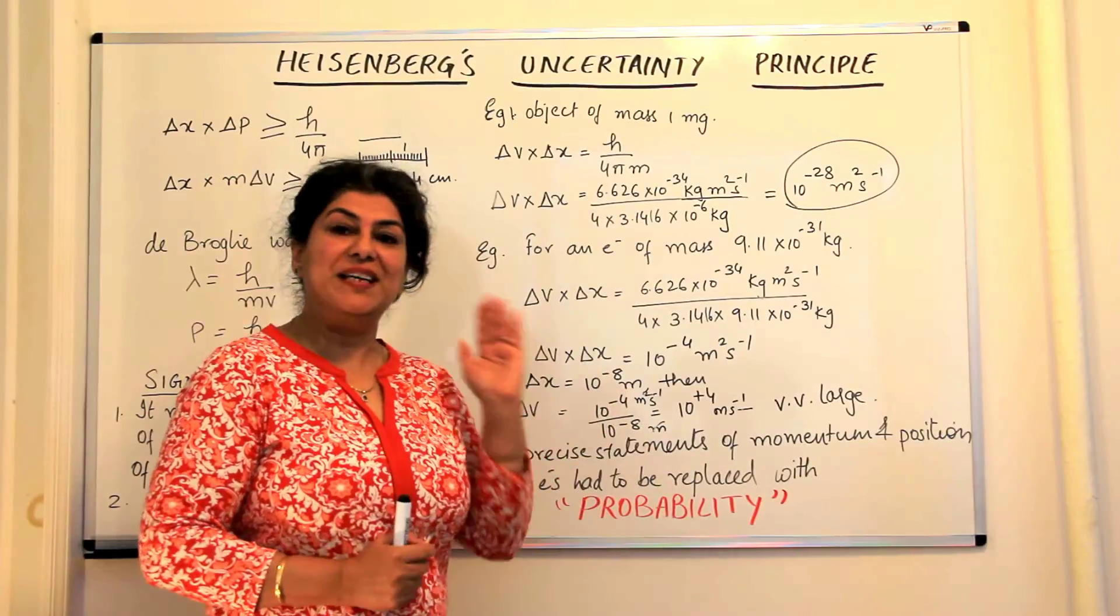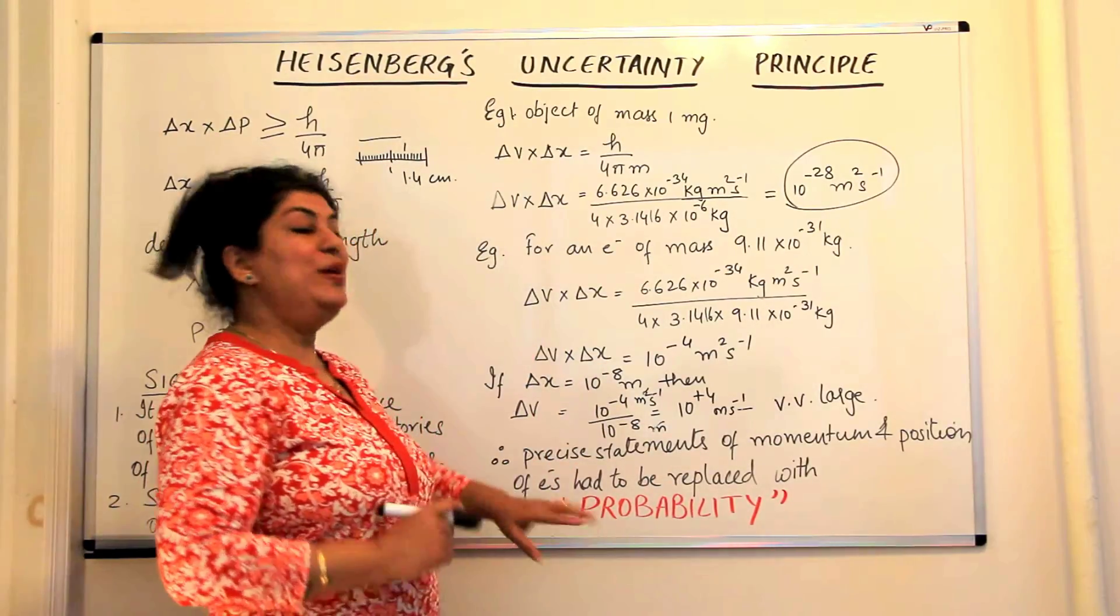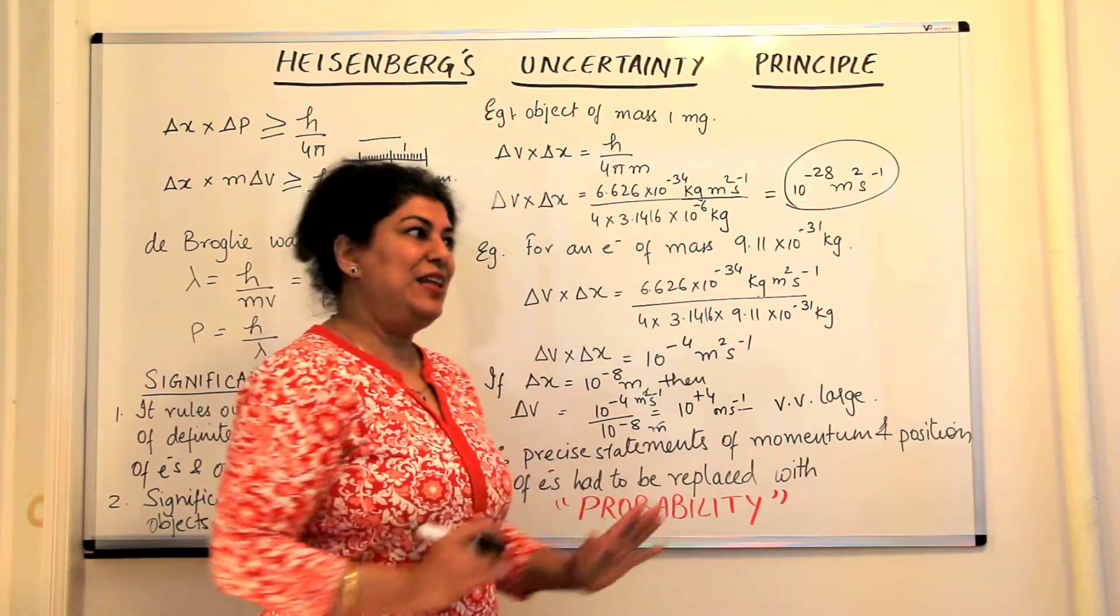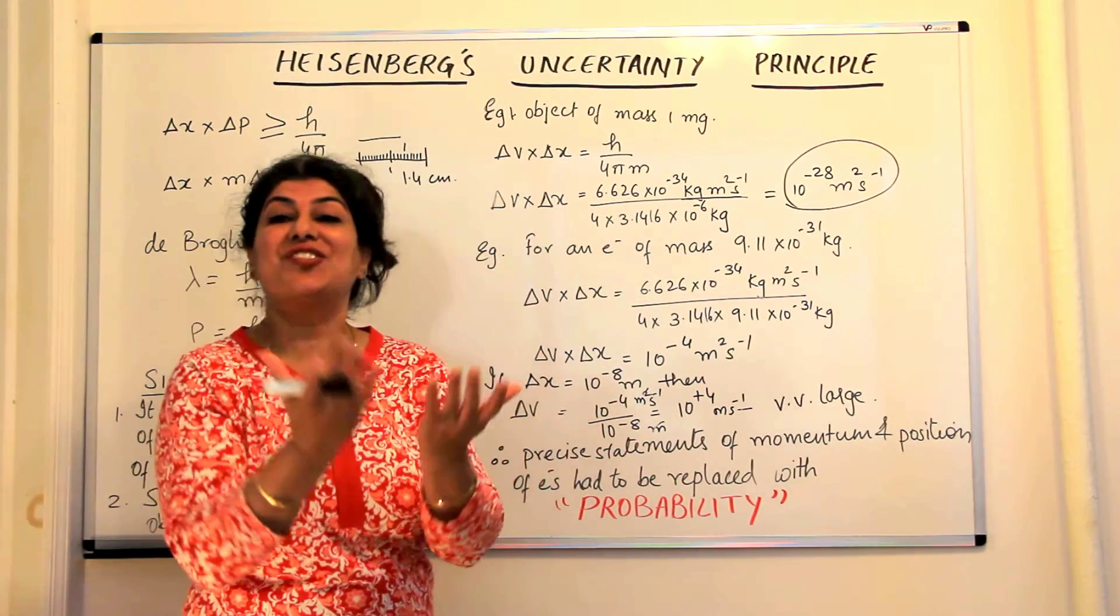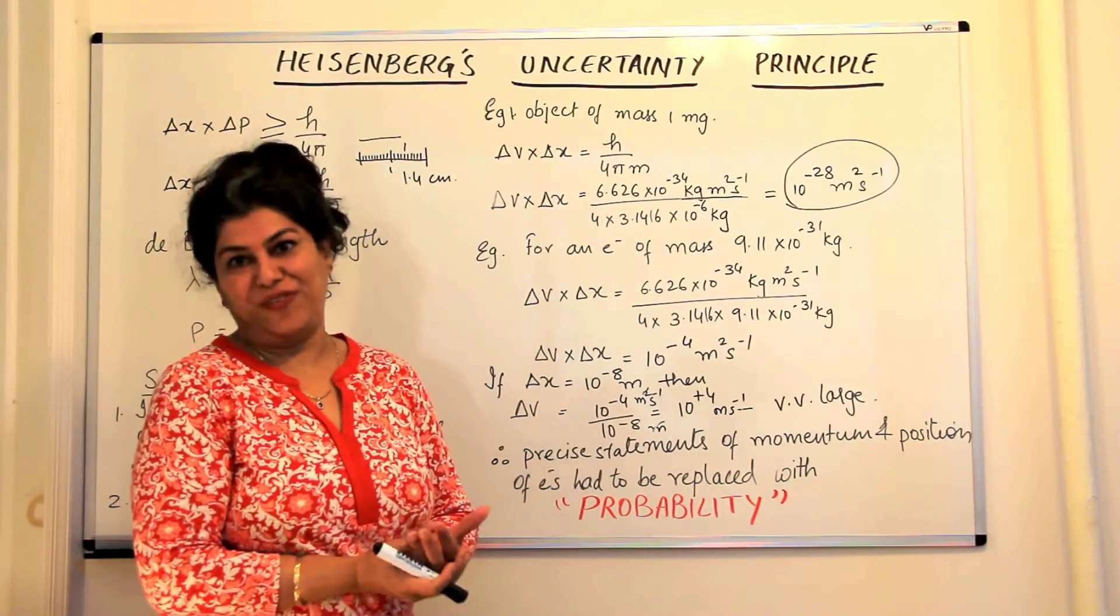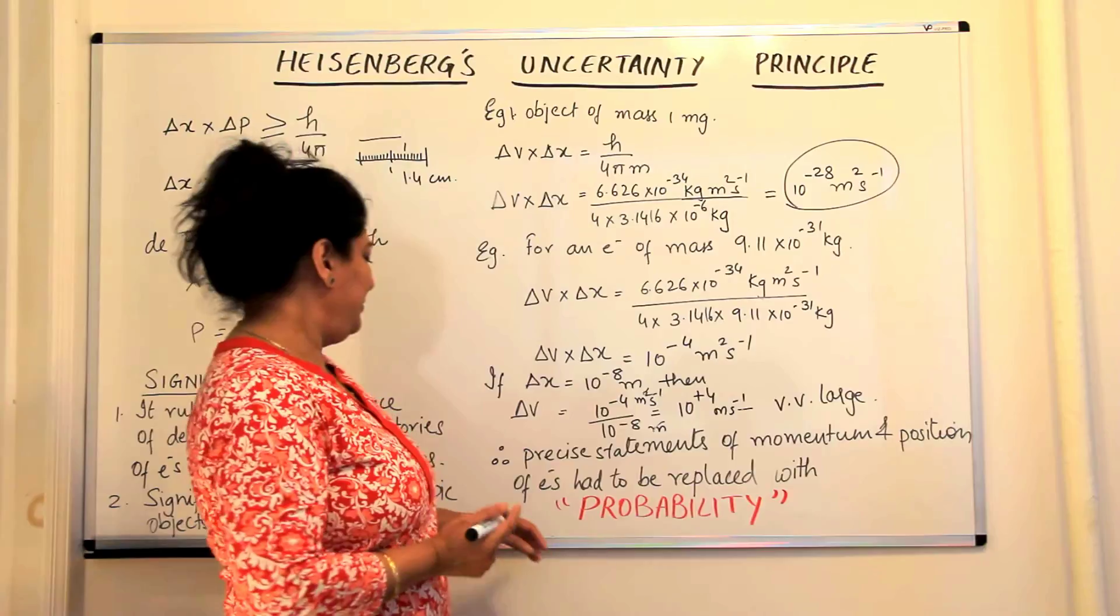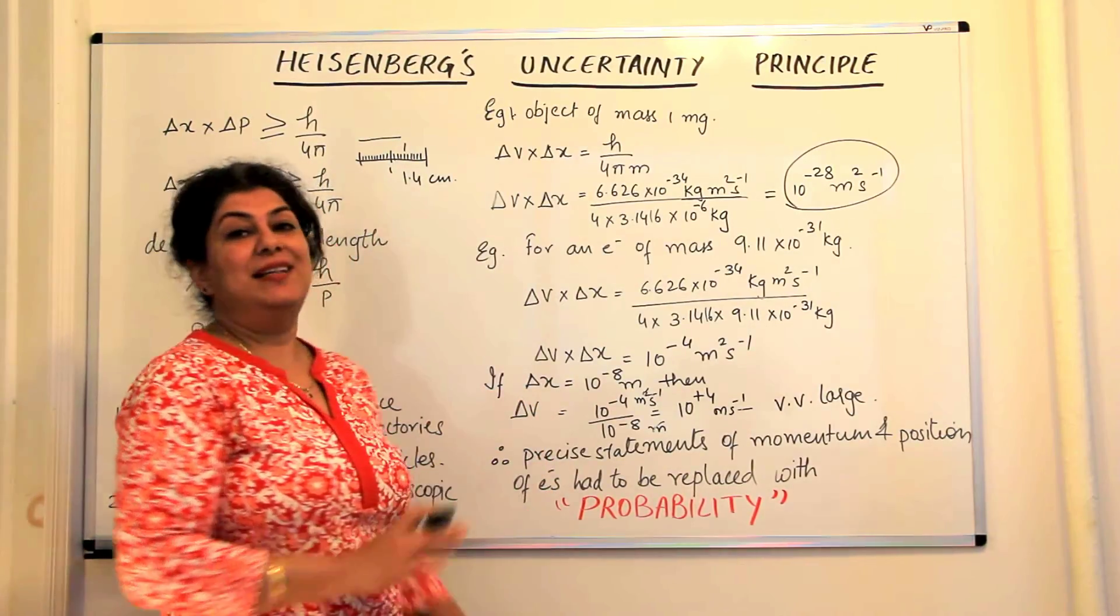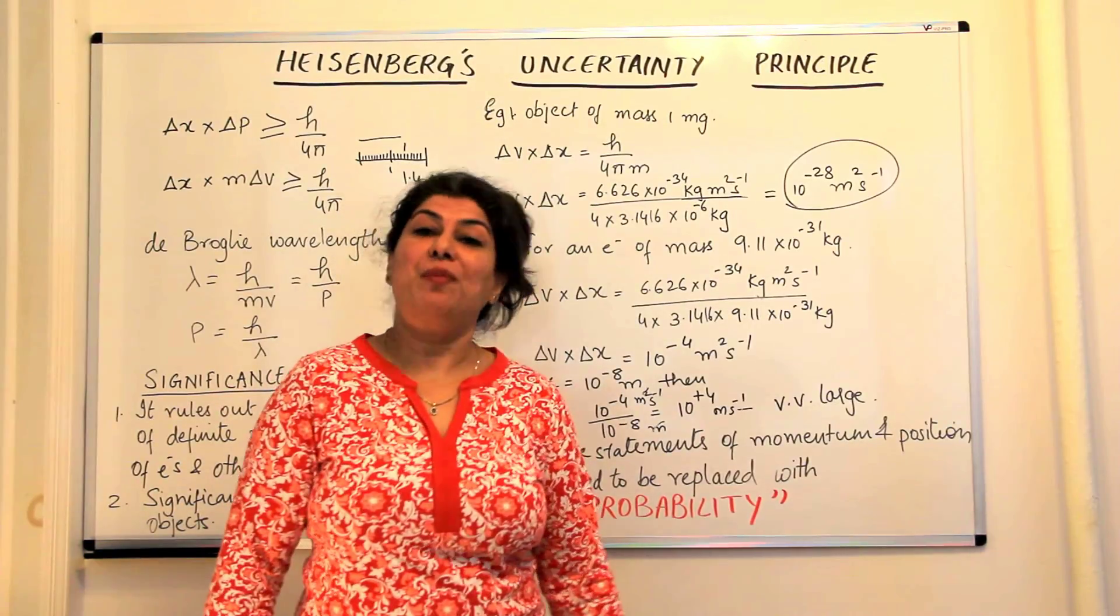We no longer spoke in definite terms and said that electrons are only probably present. Therefore there were no orbits, there were orbitals—three-dimensional spaces where there was a probability of finding an electron. Precise statements of momentum and position had to be replaced with the term probability.